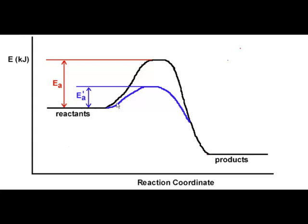So, the larger hill, the steeper hill here, the black line, is an uncatalyzed reaction. And the blue line is the same reaction, but if a catalyst was added.